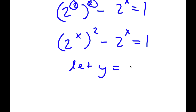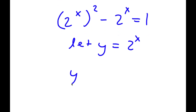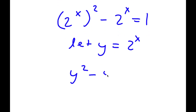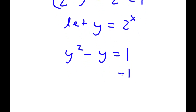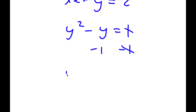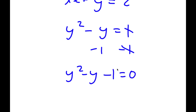Now I'm going to let y equal to 2 to the power of x. So now I have y squared minus y equals 1. Subtracting 1 on both sides, I get y squared minus y minus 1 is equal to 0.